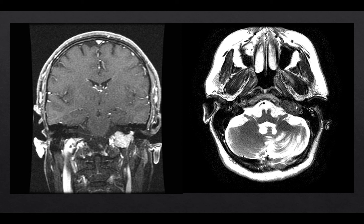We talk about different subtypes of paragangliomas based on location. If in the neck, we call it a glomus vagale. If it's in the jugular bulb, we call it a glomus jugulare. If it's involving only the middle ear, we call it a glomus tympanicum. If it's involving both the jugular bulb and the middle ear, as in this case, we call it a glomus jugulotympanicum.